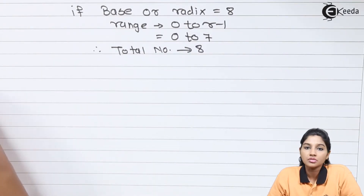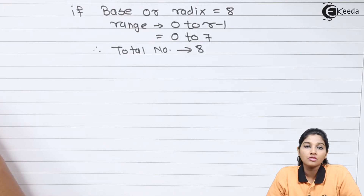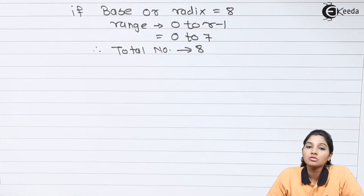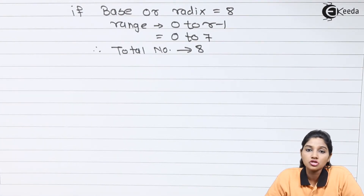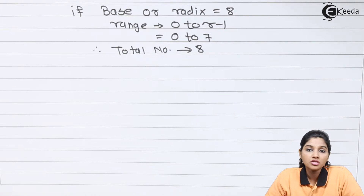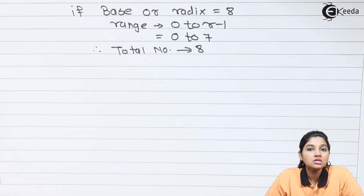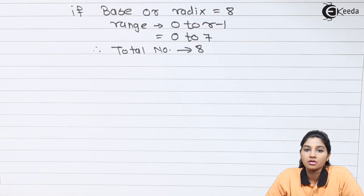Similarly, for hexadecimal, if the base is 16, then the total numbers vary from a range of 0 to 15, and the total numbers present in that system becomes 16. Now let's see the various number systems one by one.